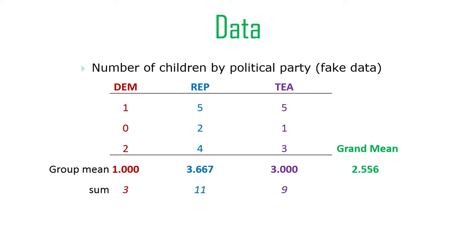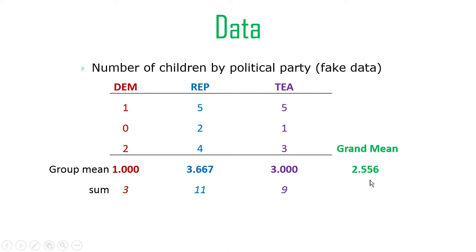Here's the data. There are only three cases in each group — a case here is a family, not an individual. The Democrats: one family had one child, one had zero, one had two. The Republicans: five children, two children, four children. The Tea Party: five, one, and three. The Democrat group mean is one, the Republican group mean is 3.67, and the Tea Party group mean is three. The grand mean, taking all nine numbers and dividing by nine, is 2.56. There are only nine numbers across three groups.